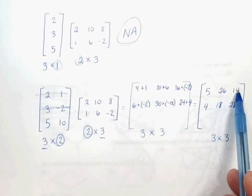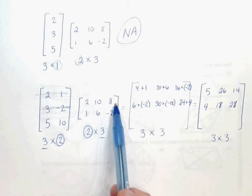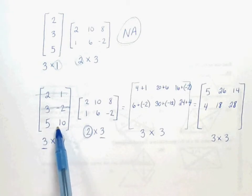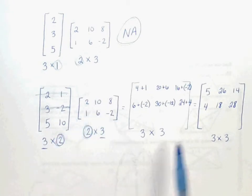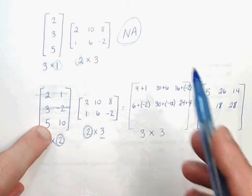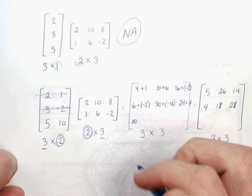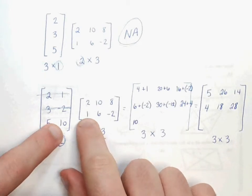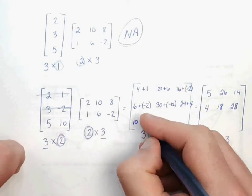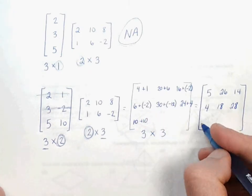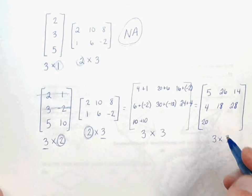We used the first row with all three columns, we used the second row with all three columns, got the second row of answers. So now we've got to use our third and final row with all three columns to finish out our answer matrix. 5 times 2 is 10. Slide over and down. Now 10 times 1 is 10. So 10 plus 10 would be 20.